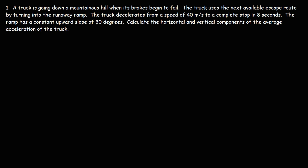A truck is going down a mountainous hill when its brakes begin to fail. The truck uses the next available escape route by turning into a runaway ramp. The truck decelerates from a speed of 40 meters per second to a complete stop in 8 seconds. This particular ramp has a constant upward slope of 30 degrees. Our goal in this problem is to calculate the horizontal and vertical components of the average acceleration of the truck.